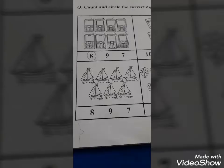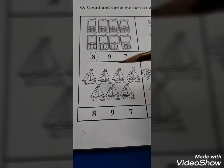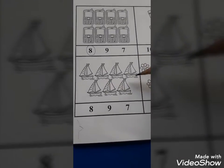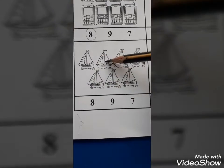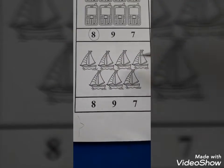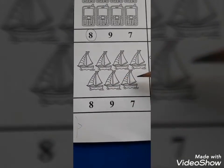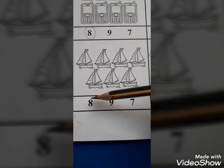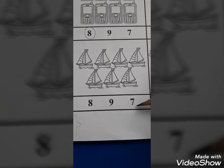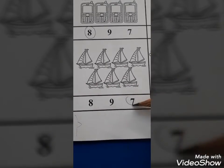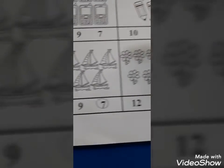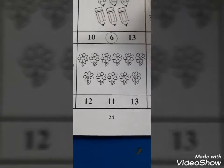Good students. Now the next objects are ships. Count these with me: 1, 2, 3, 4, 5, 6, 7. So find out where is 7. Here is 7. This is your correct digit, so circle this.